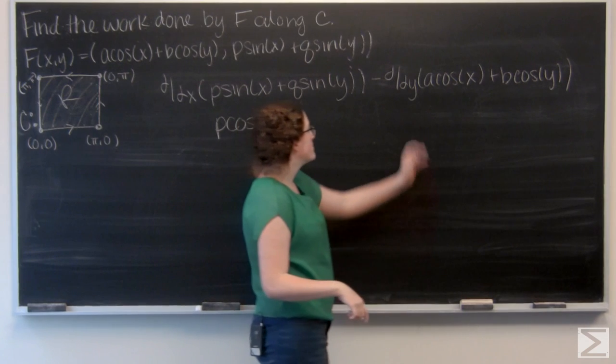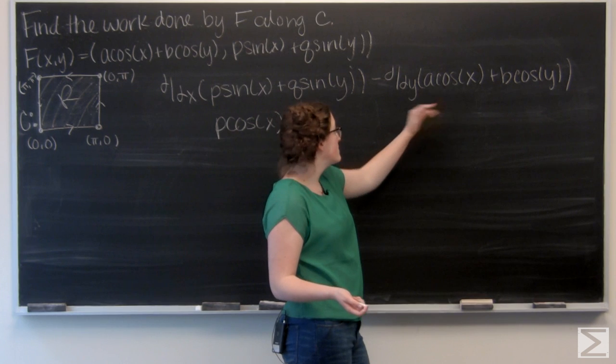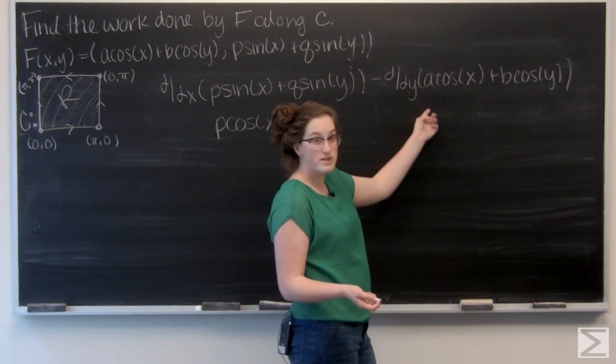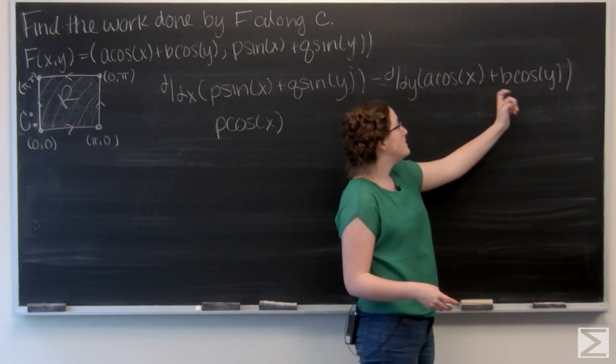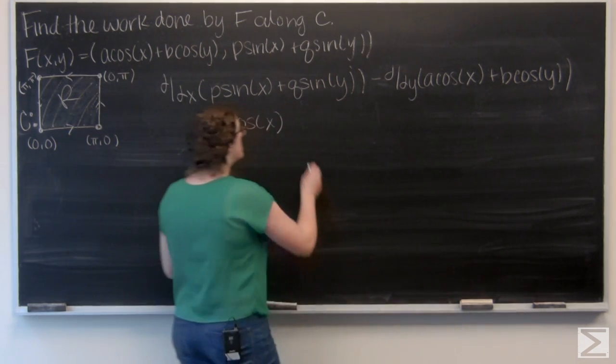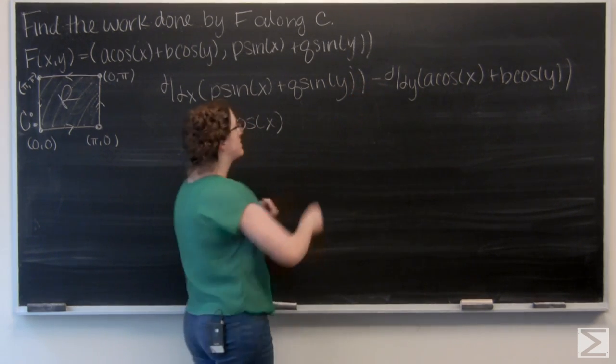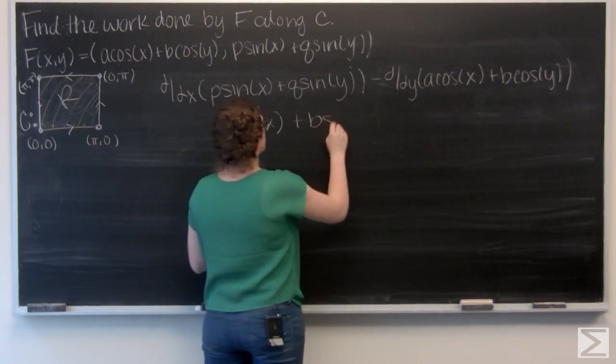And then for the second term, likewise, when I'm differentiating A cos(x), that's treated like a constant when differentiating it with respect to y, so that's going to be 0. And then B cos(y) differentiates to negative B sin(y). And since I'm subtracting that, those two negatives cancel out and I add B sin(y).